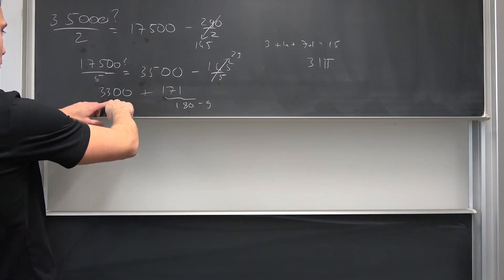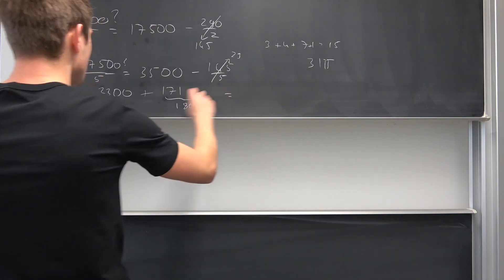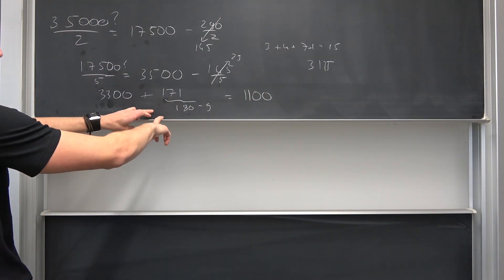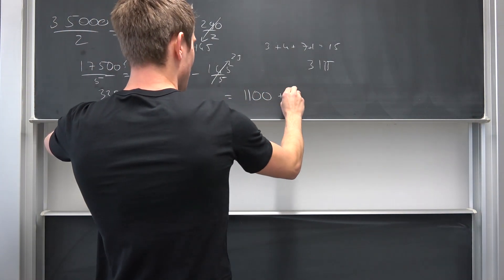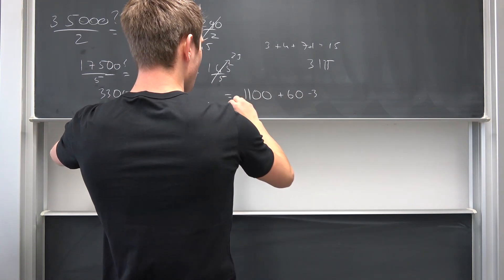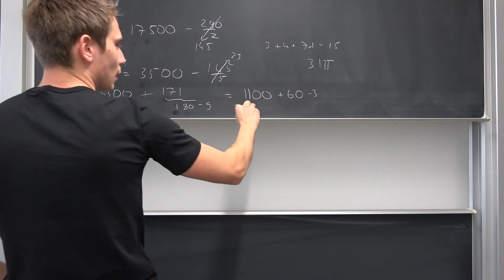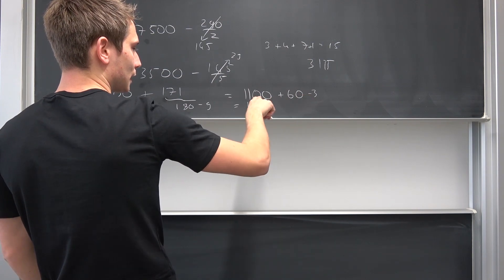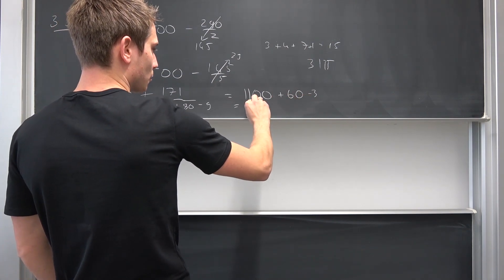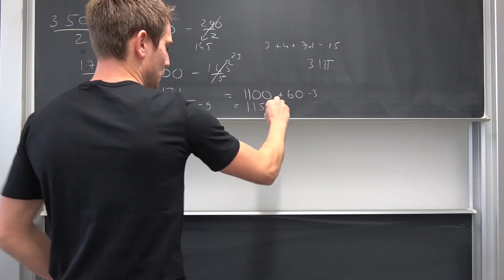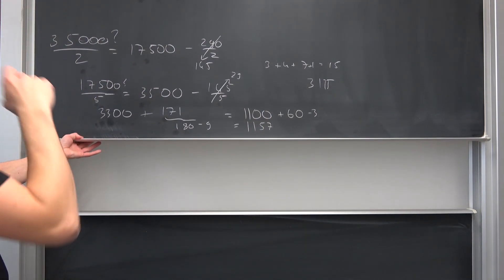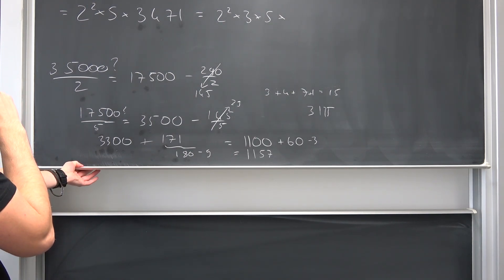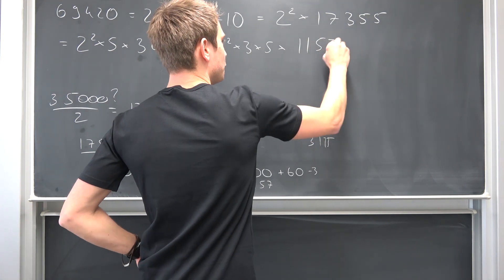Or we can decompose it like this: 3,300 plus, this makes 171. 171 is nothing other than 180 minus 9. That's divisible by 3. So sieving works out quite nicely here. So we have 2 squared times 3 times 5 times, oh what are we actually going to end up with? This makes 1,157.